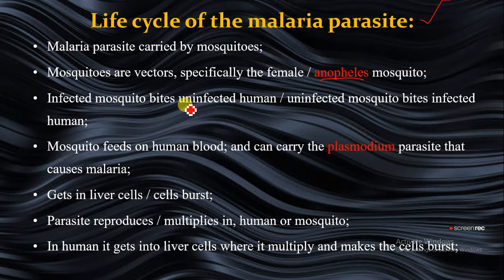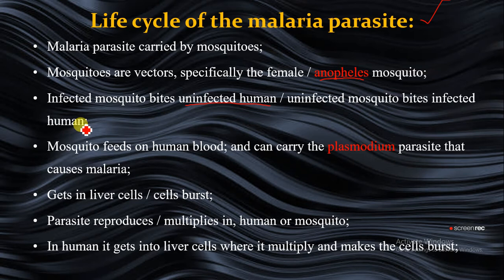If an infected mosquito bites an uninfected human, the human becomes infected. If an uninfected mosquito bites an infected human, the mosquito will now carry the parasite. This is how malaria spreads, because mosquitoes feed on human blood and can carry the plasmodium parasite that causes malaria.